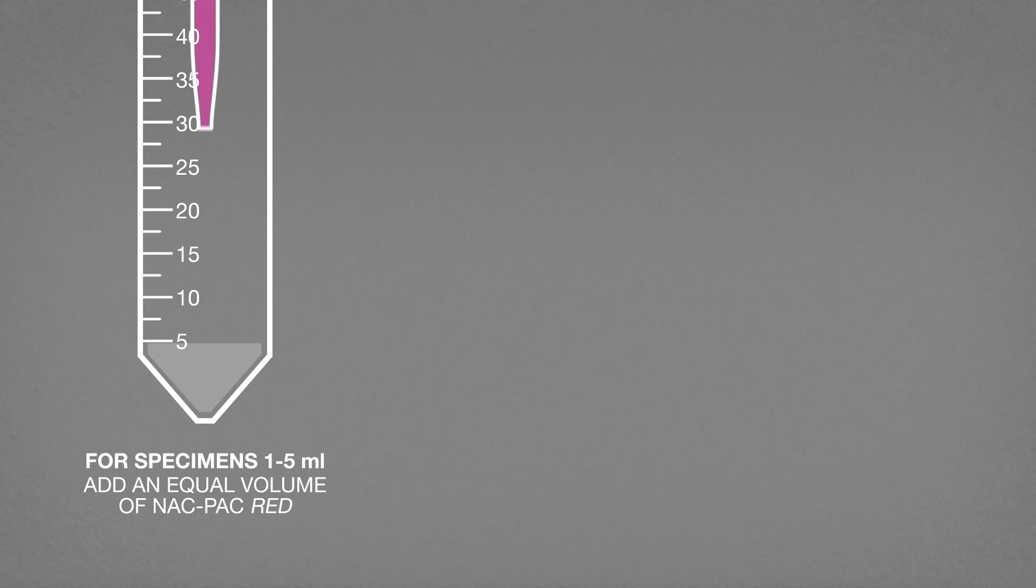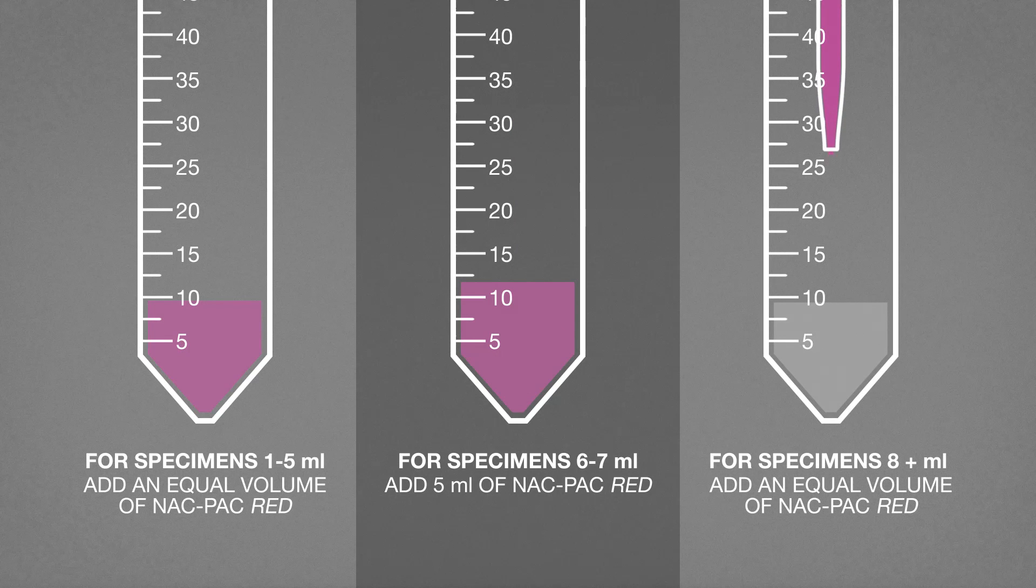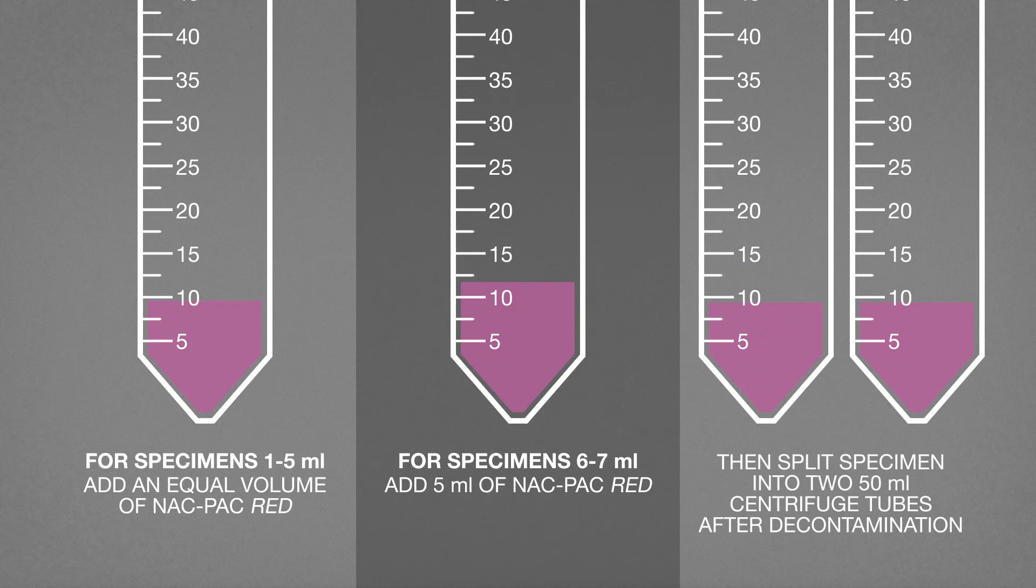For specimens 1 to 5 ml, add an equal volume of SnackPak Red. For specimens 6 to 7 ml, add 5 ml of SnackPak Red. For specimens 8 ml or greater, add an equal volume of SnackPak Red and split the specimen into two 50 ml centrifuge tubes after decontamination. These volumes must be measured precisely.